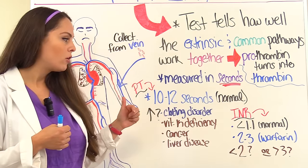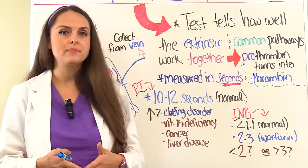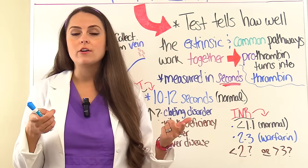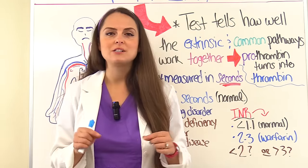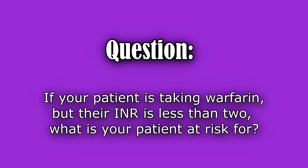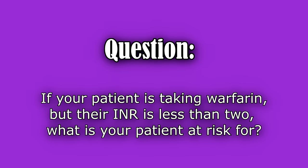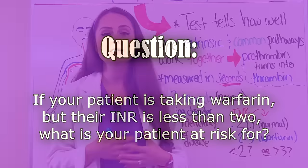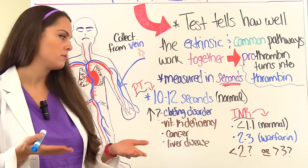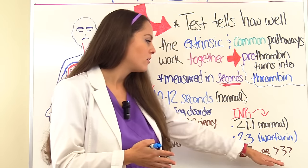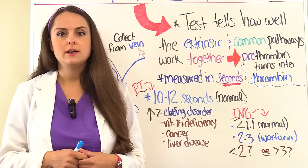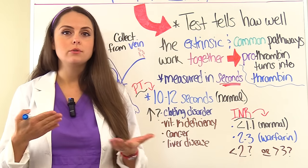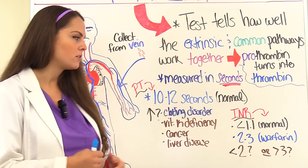A normal INR level is generally less than 1.1. If a patient's on warfarin, you want them at an INR of about 2 to 3. Test question: if your patient is taking warfarin but their INR is less than 2, what is your patient at risk for? They're at risk for developing clots because they're not therapeutic. How about if their INR is greater than 3? They're at risk for excessive bleeding because their clotting levels are really prolonged. Keep those concepts in mind.